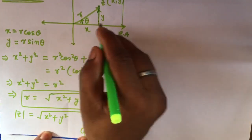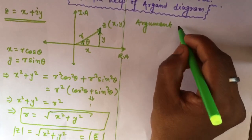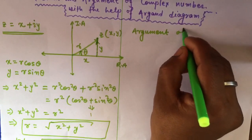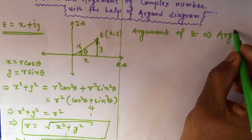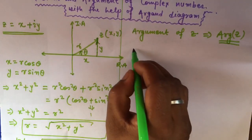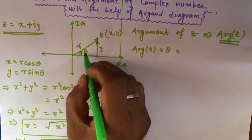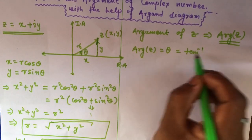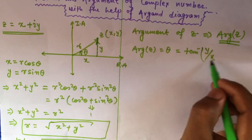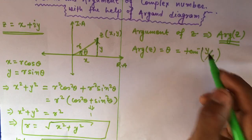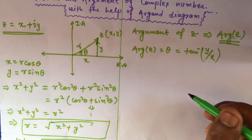Now from the Argand plane we will see the argument of z, denoted as arg(z). The argument is the value of theta, and theta equals tan inverse of y by x. So arg(z) = tan⁻¹(y/x).